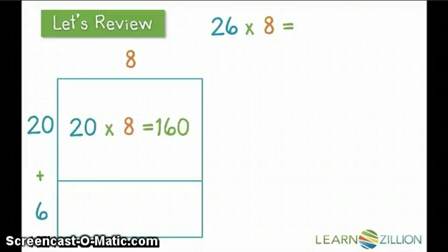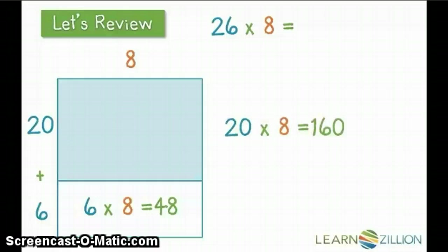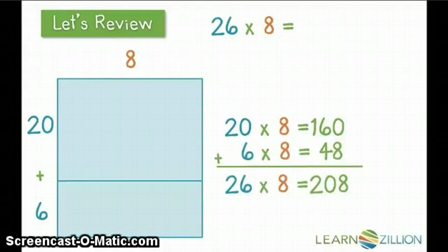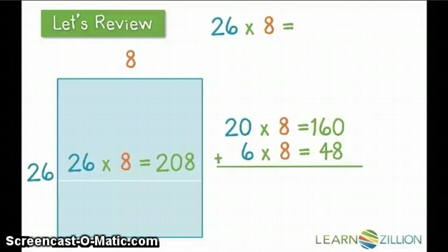20 groups with eight in each group totals 160, and six groups with eight in each group totals 48. Same process. We put the two pieces back together to get a total of 26 groups with eight in each group for a product of 208, which becomes our final product.